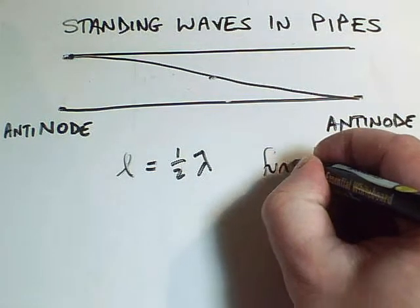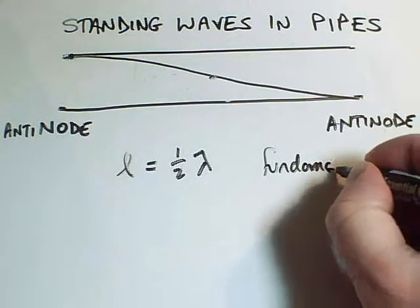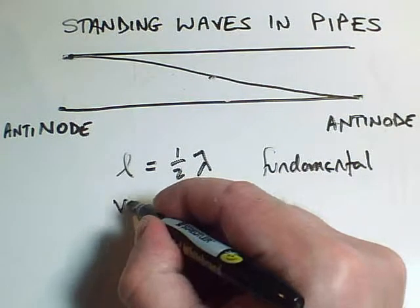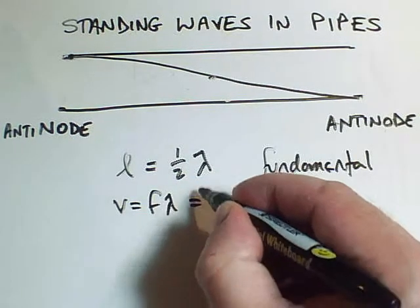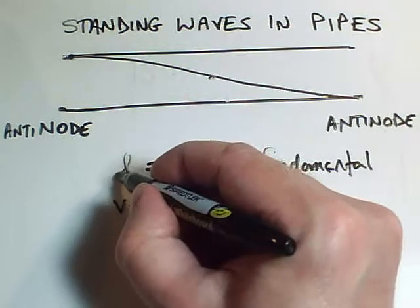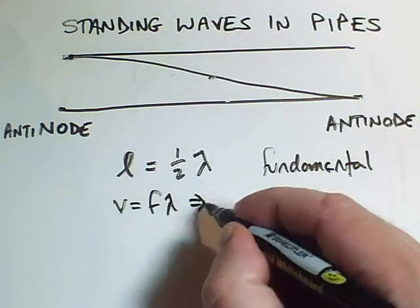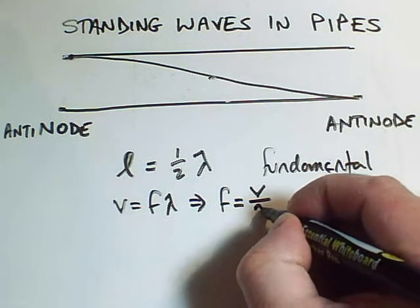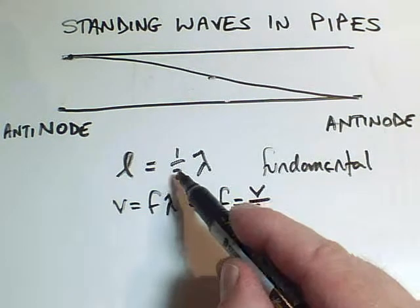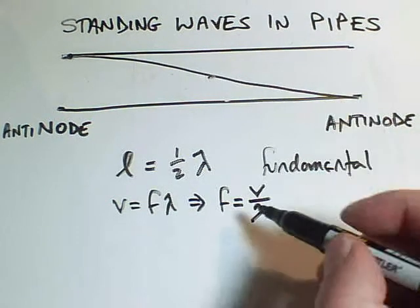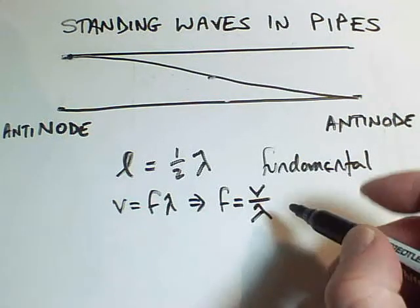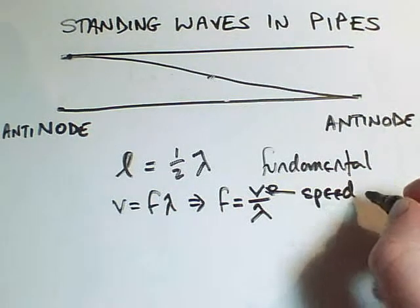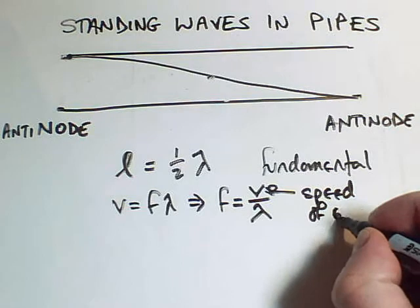And in order to work out the frequency, I'd have to use v equals f lambda. So if I know this lambda, because I know the length of the pipe, I can work out that the frequency will be the speed divided by lambda. So I can find lambda by doubling the length of the pipe, and I can find the frequency by doing v divided by lambda, and v is going to be the speed of sound, because these are sound waves. So that's the speed of sound.